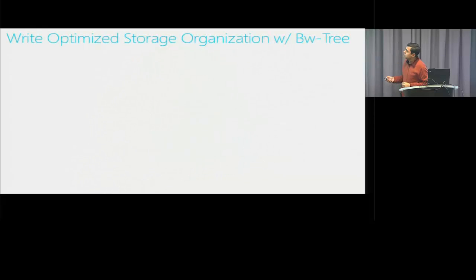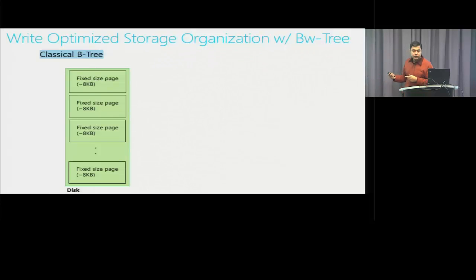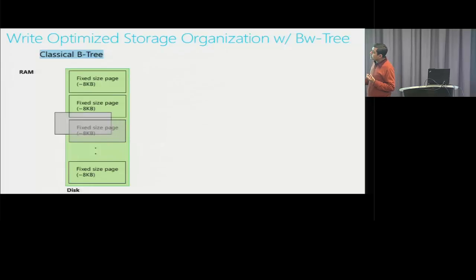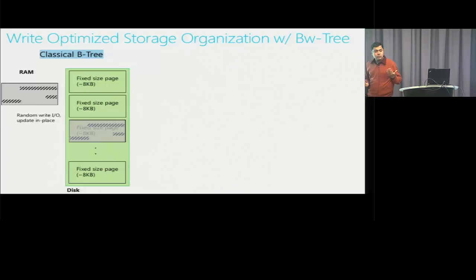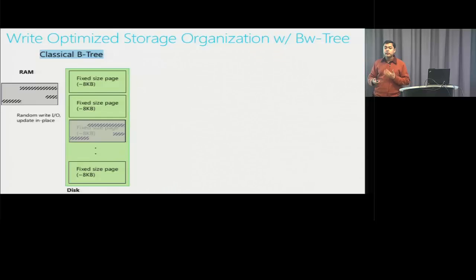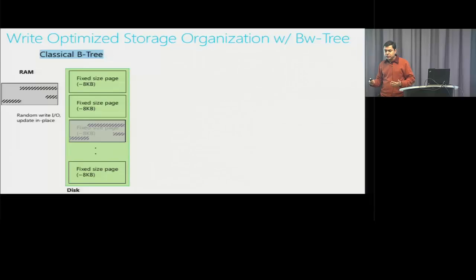Comparing with the classical B-tree: storage is organized into fixed-size pages, typically 8 kilobytes, each corresponding to a logical data structure page. When reading, you fetch the page into RAM, update in place, and write back — a random write. In workloads with little locality across the key space, and with small buffer pools common in cloud multi-tenancy scenarios, this produces random writes all over the place: inefficient on hard disk due to seeks, and inefficient on flash due to write amplification and garbage creation.